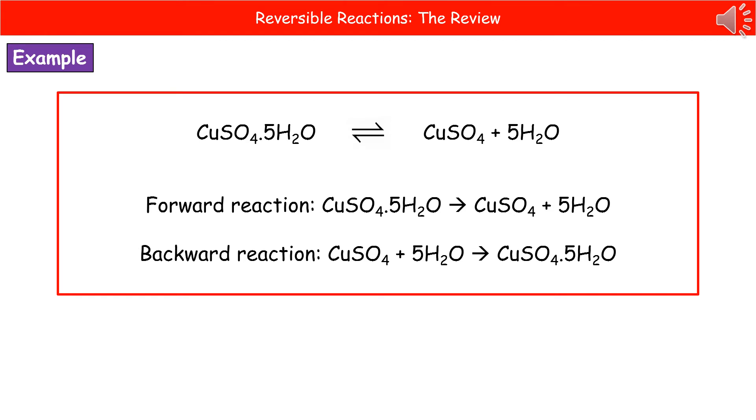The backwards reaction is going from the right to the left. So you start by writing down the products, put your arrow in, and then you write down the original reactants. So just make sure you know which way is forward and which way is backward.